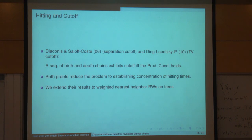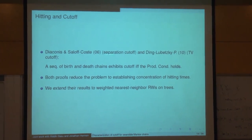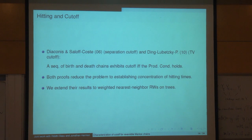In both of these papers, the proofs were based on properties of hitting times in birth-and-death chains, and a beautiful theorem of Karlin and McGregor that says the hitting time in such a chain from one vertex to another can be written as a sum of independent geometric variables. This is not at all obvious. If I want to go from zero to n on a line, these hitting times are all independent but they're not geometric and they can have fat tails.